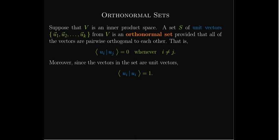Now, in addition to an orthogonal set, if our set of vectors all have norm one — so they are unit vectors — then we call it an orthonormal set. Not only is their inner product with each other equal to zero, but the inner product of each vector with itself is equal to one because they're unit vectors.